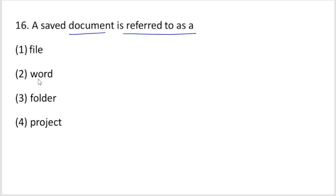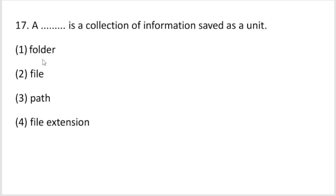A saved document is referred to as a file. When you save a document it becomes a file. The options are file, word, folder, and project — and the answer is file.